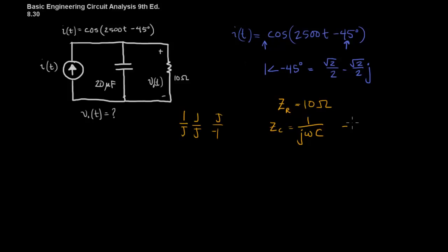Okay, so this is negative j times 1 over omega c, which is negative j times 1 over omega, this is omega right here, 2500 times 20 times 10 to the negative 6 for 20 microfarads. And if you work that out, you'll find that this is minus 20 j.